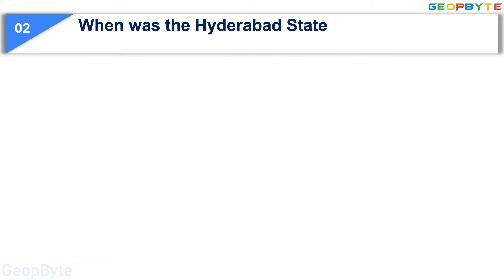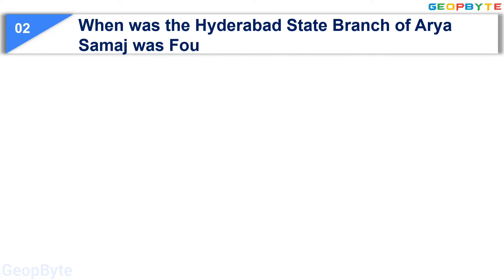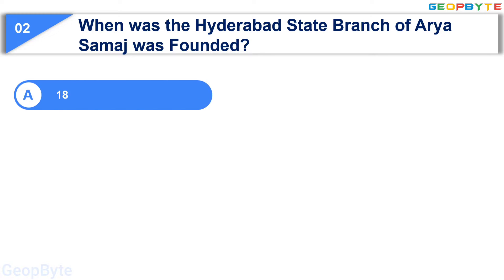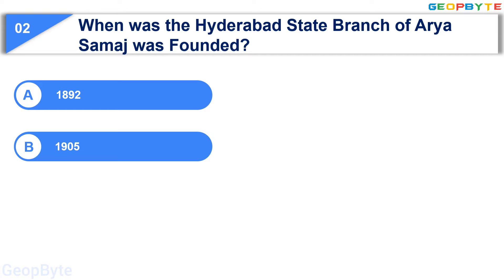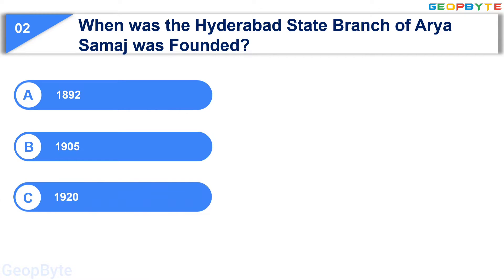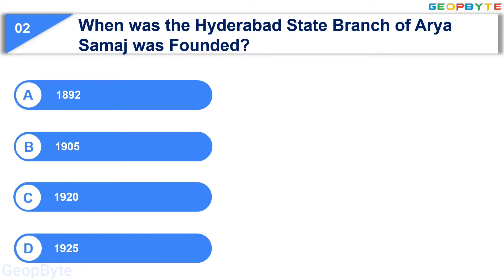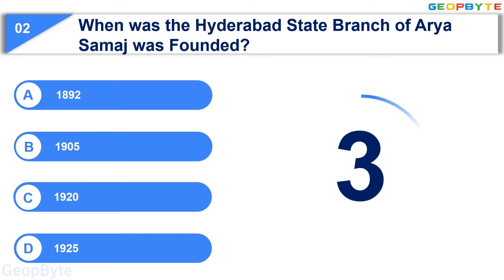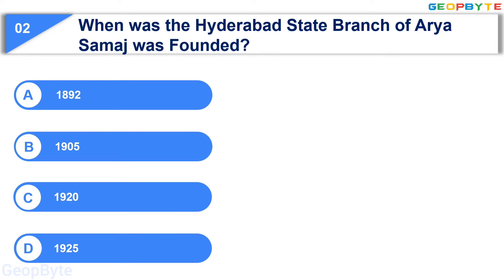Moving to the second question: when was the Hyderabad State Branch of Arya Samaj founded? Option A: 1892, Option B: 1905, Option C: 1920, Option D: 1925. Your time starts now. Your time is up and the correct answer is Option A: 1892.